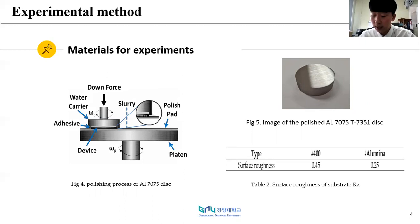The average value of the processed material surface roughness was calculated by measuring surface roughness 10 times with a surface roughness meter. As shown in Table 2, the average values were 0.45 and 0.25 respectively.